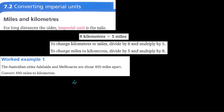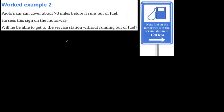We divide 450 by 5, which equals 90. Then we multiply 90 by 8, which gives us 720. So the answer is 720 kilometers.